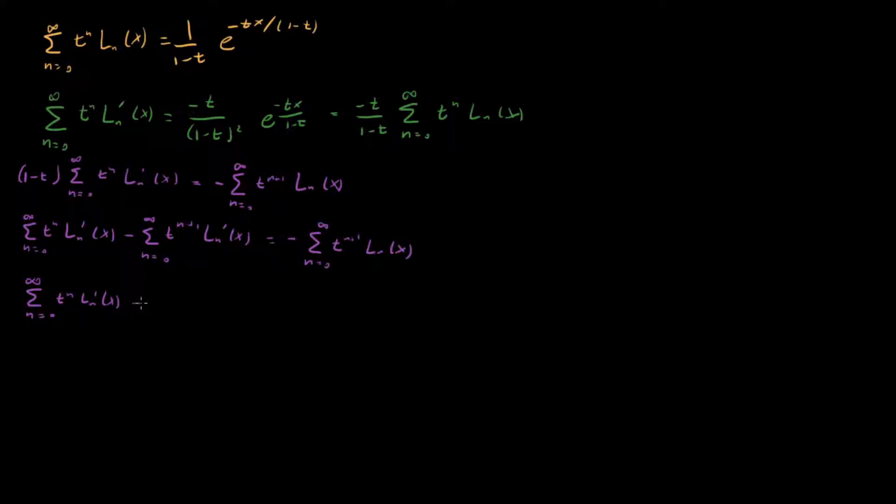Now let's start doing some re-indexing. So this first term right here is good. It's already in terms of t to the n, so we don't have to modify it at all. But the second term, let's take a look at this. The first term in this series is, so n equals 0 corresponds to t to the 1. So let's start our sum at n equals 1. Then we'll have t to the n, and this L_n right here needs to be shifted down by 1. What about this right-hand side? Same type of story. We start our sum at n equals 1, and then we'll have t to the n times L_(n-1) of x.